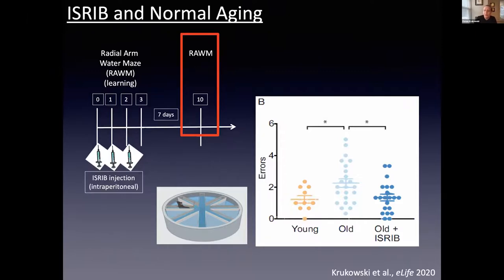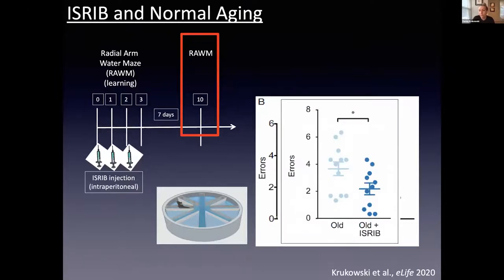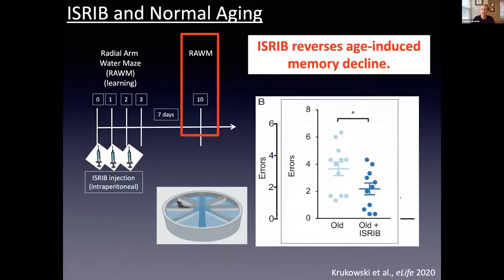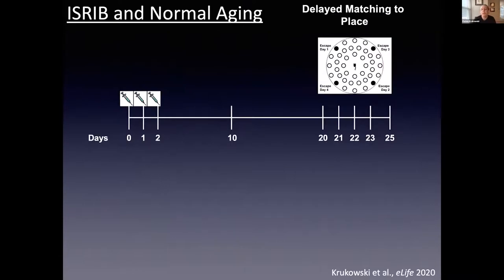We also looked at old female mice and saw an identical pattern — ISRIB administration reverses this age-induced deficit in females as well. We then wanted to see how long the effects of ISRIB administration last. We kept the mice alive and starting on day 20 introduced them to a different behavioral paradigm: the delayed matching-to-place Barnes maze, a large table with 40 holes where one hole has an escape tunnel. Unlike the radial arm water maze, we change the location of the escape tunnel each day, making it very difficult for mice — especially aged mice, who show little to no improvement.